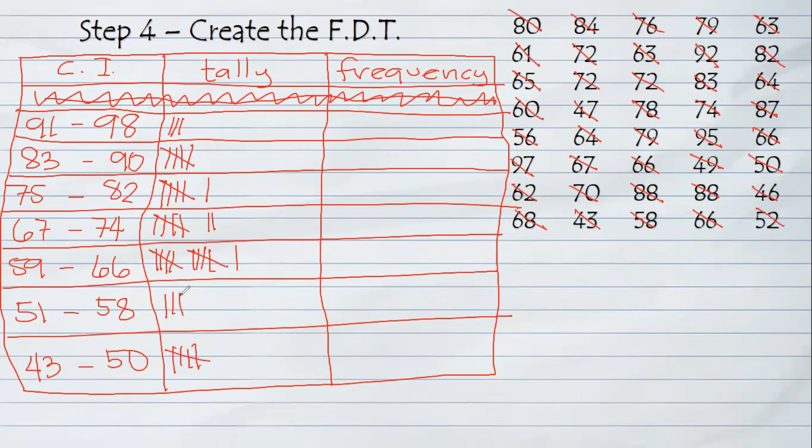So we are done tallying all the raw data. All we need to do is count the tally or the sticks in the tally and we will write the numerical value to the frequency. We have 3, then 5, then 6, then 7, 11, 3, then 5. To check your frequency all you need to do is add all the frequency and it must be equivalent to the total number of data which is equivalent to 40. And that's it, so we are done creating the frequency distribution table given ungrouped data.